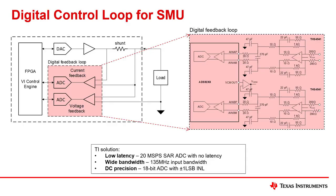Fast rise time control loops are becoming increasingly common in semiconductor testers and lab instrumentation. The no-latency architecture and wide input bandwidth of the ADS9219 family makes it ideal for digital control loops. The dual ADC core allows for the simultaneous measurement of the current and voltage paths within a digital control loop, all within a single package.